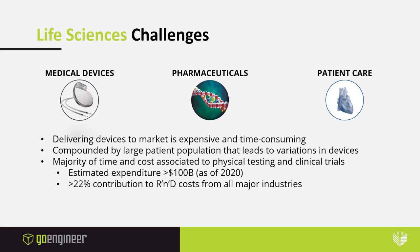As far as the life sciences is concerned, Dassault Systems has divided them into three groups in product development: medical devices, pharmaceuticals, and patient care, with applications ranging from developing stents to pacemakers, all the way to manufacturing drugs and packaging, and drug delivery situations in patient care. One common aspect of all these sectors is that developing devices and delivering them to market is a very expensive and time-consuming process. They've estimated an expenditure of over 100 billion dollars as of 2020, contributing to about 22 percent of R&D costs across major industries such as automotive and aerospace.